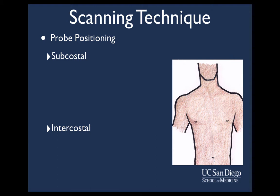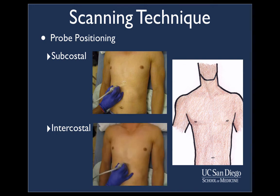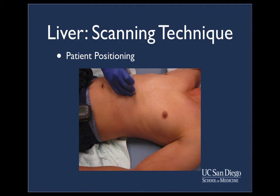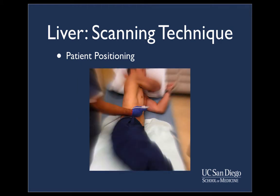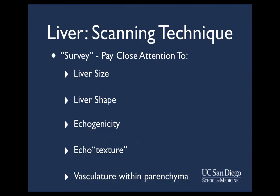When performing a liver scan, the most useful approaches for probe positioning include the subcostal and intercostal approaches. The examiner may need to try both approaches before obtaining an ideal view. Ideally, the patient should lie supine on the examination table. The patient may be asked to take a deep breath and hold it for up to 30 seconds to obtain better views of the liver. If necessary, the patient may also be turned to the left lateral position. To perform the liver exam, a survey of the liver is done by scanning the organ in B mode, from side to side and from superior margin to inferior margin, in both the transverse and longitudinal planes. During the survey, pay close attention to the size, shape, and echogenicity of the liver.